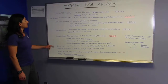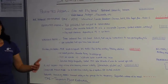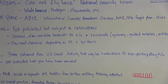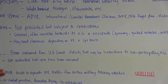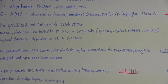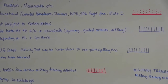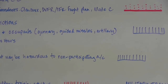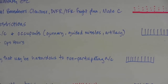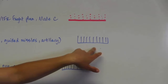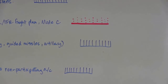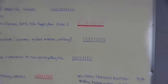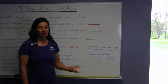Next are restricted areas. Restricted areas are not prohibited, but they are subject to restrictions and it would be wise for you to know what these are because some of them could be hazardous to your health — unusual, often invisible hazards like gunnery, guided missiles, and artillery. You may need clearance depending on the flight level and operating hours. If you see an R on a sectional, that means it's a restricted area, and there's a way to look up the operating hours and flight levels.